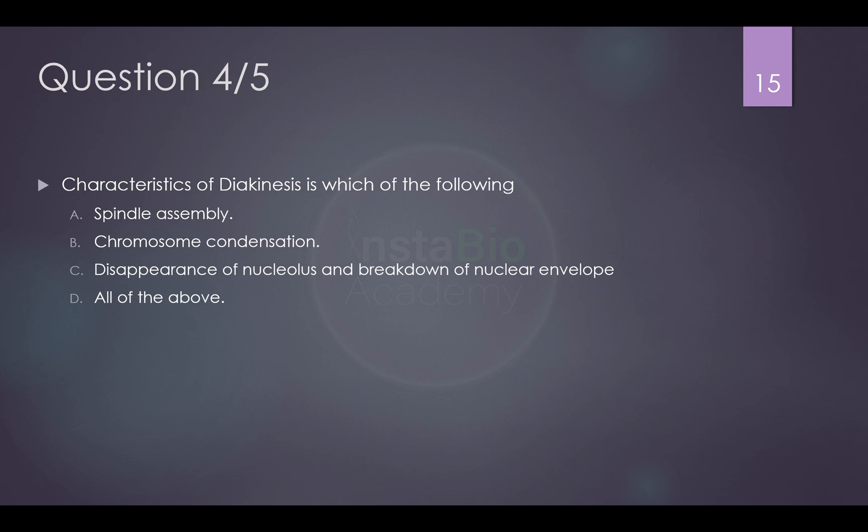Characteristics of diakinesis. Now, if you remember from our previous lecture, lezipadidi, this is diakinesis which is last stage of prophase. That means the next is metaphase. Now, what are the requirements for metaphase? That will be characteristic of diakinesis. Spindle assembly? Yes. Chromosome condensation? Yes. That is how they will assemble at the metaphase plate. Disappearance of nucleolus and breakage, breakdown of nuclear envelope? Definitely. So best answer is all of the above. It is a simple question.